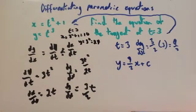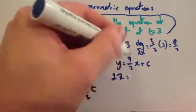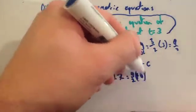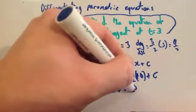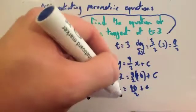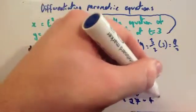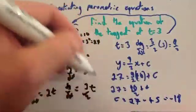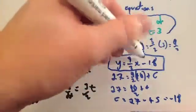We have our x and y, so we put these back into y equals mx plus c. So 27 equals 9/2 times 10, plus c. That gives 27 equals 90/2, which is 45, plus c. So c equals 27 minus 45, which is minus 18. The equation of the tangent is y equals 9/2 x minus 18.